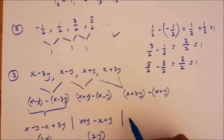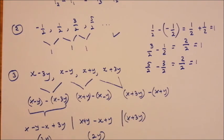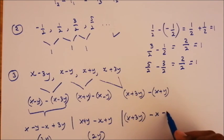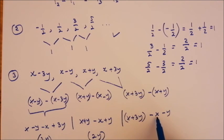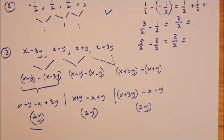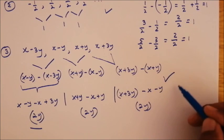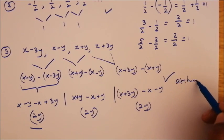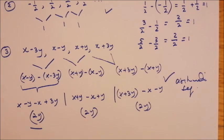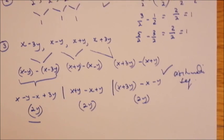For the last pair: x plus 3y minus x minus y — x minus x is zero, and 3y minus y equals 2y. All three differences equal 2y, which shows this is an arithmetic sequence with a constant common difference between consecutive terms.